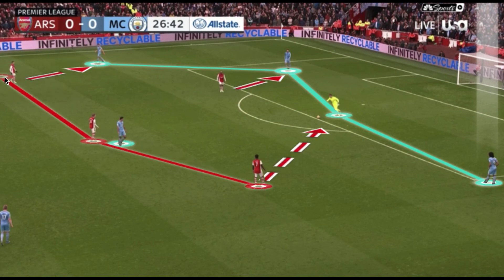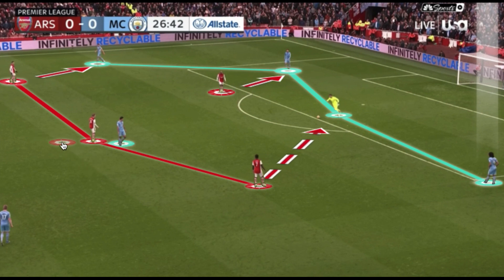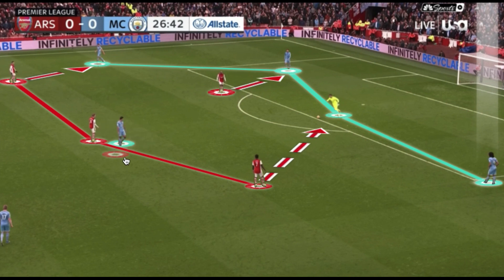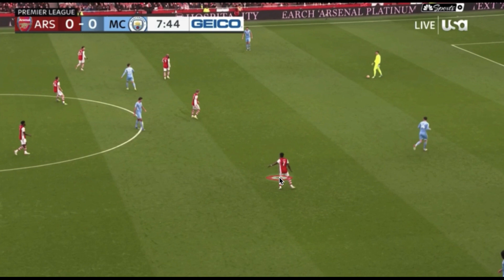In their high block, Arsenal went with a 4-2-3-1 with Lacazette at the top of the press. This gave them more horizontal lines to impact Manchester City on multiple lines of play, and having more lines of pressure allowed them to stagger their lines and control Manchester City's buildup a bit better. When Manchester City goes with a single pivot, the lone attacking midfielder Odegaard covers this quite well by moving into the midfield third.